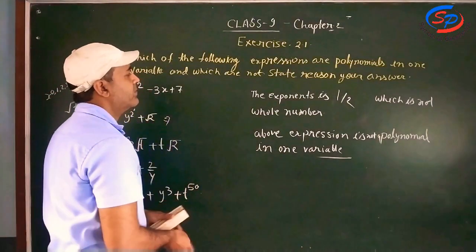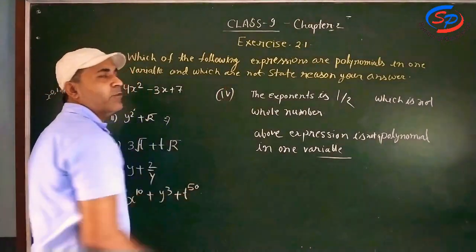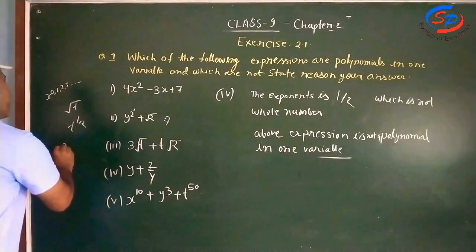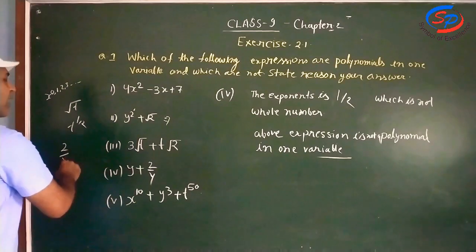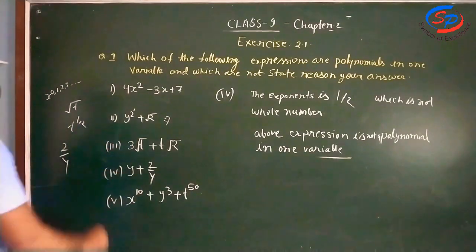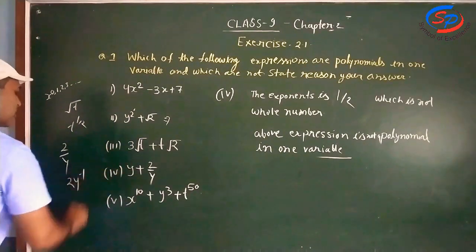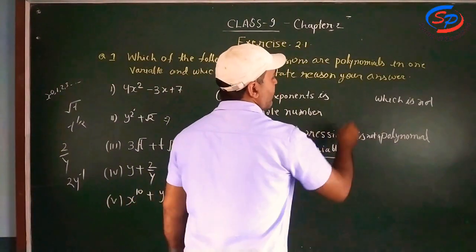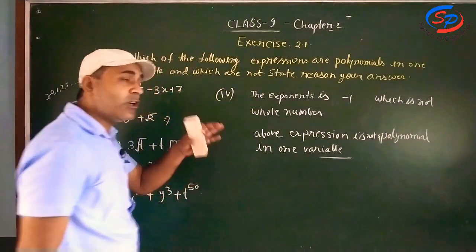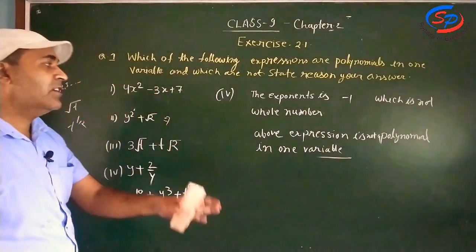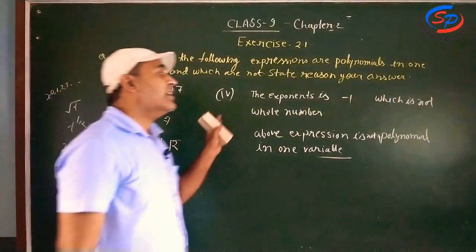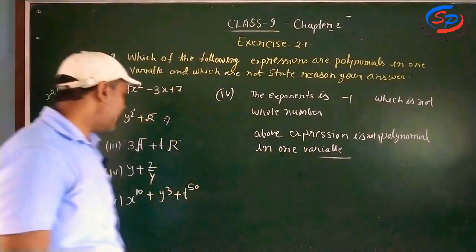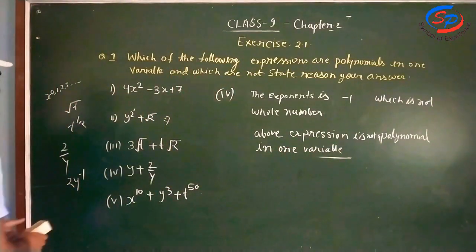Number 4 is: y plus 2 upon y. Now 2 upon y means y goes to the numerator and becomes y to the power minus 1, so 2y⁻¹. The exponent is minus 1, which is not a whole number, so the above expression is not a polynomial in one variable.